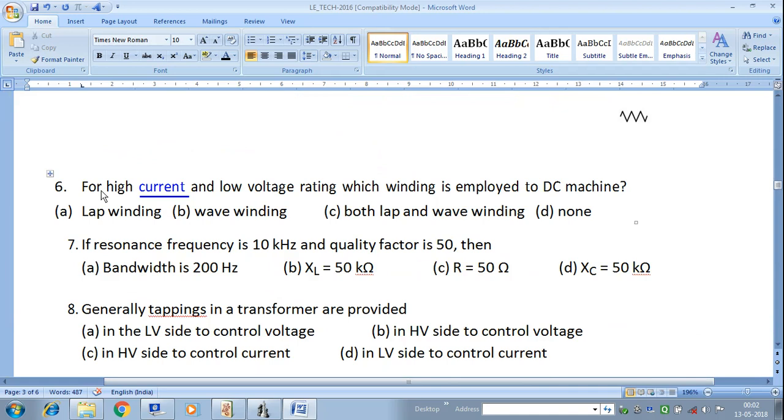Next question: For high current and low voltage rating, which winding is employed? Answer is lap winding for high current. The lap winding is used because in case of lap winding, the number of parallel paths equal to number of poles, that is A is equal to P.